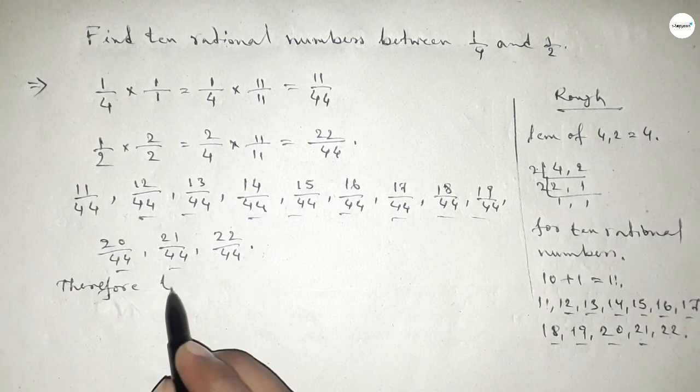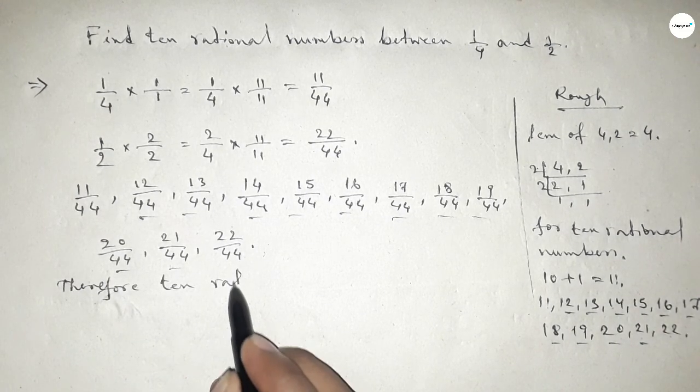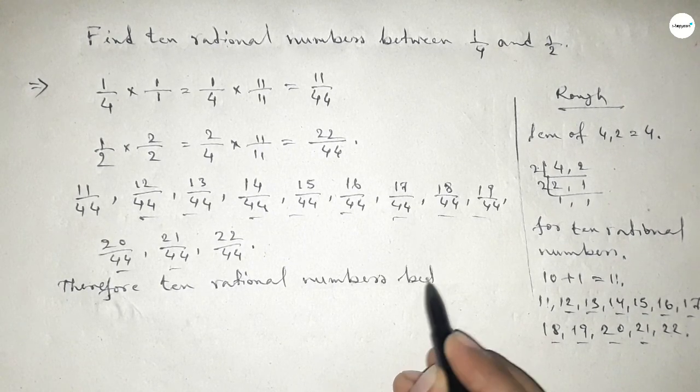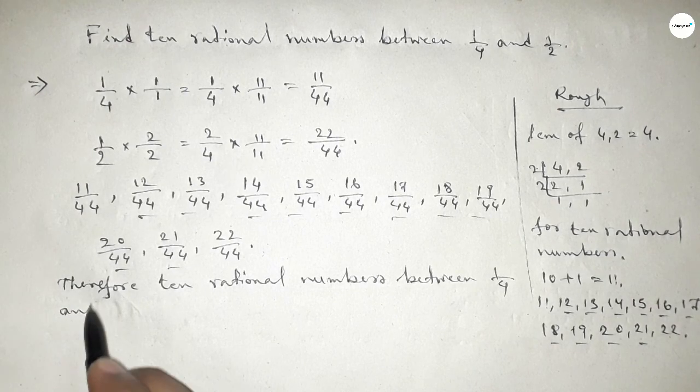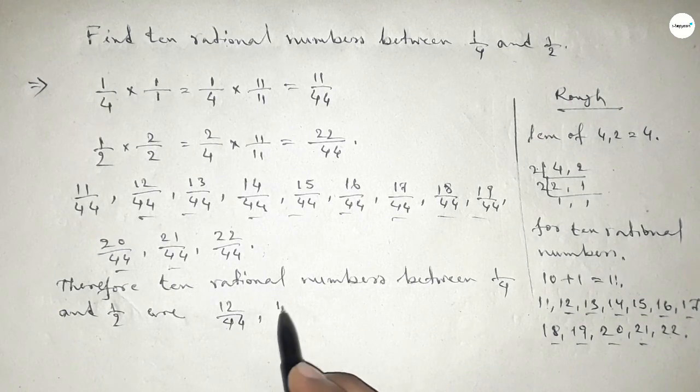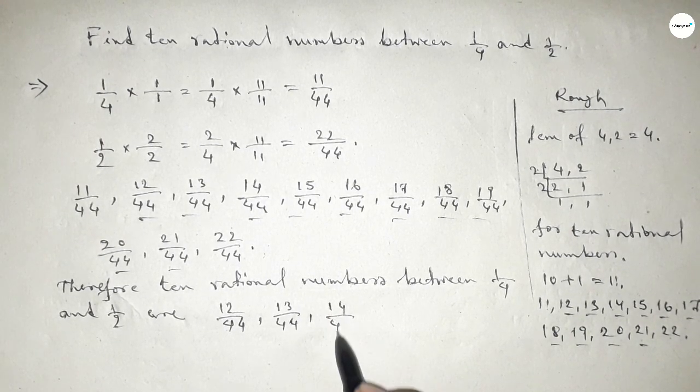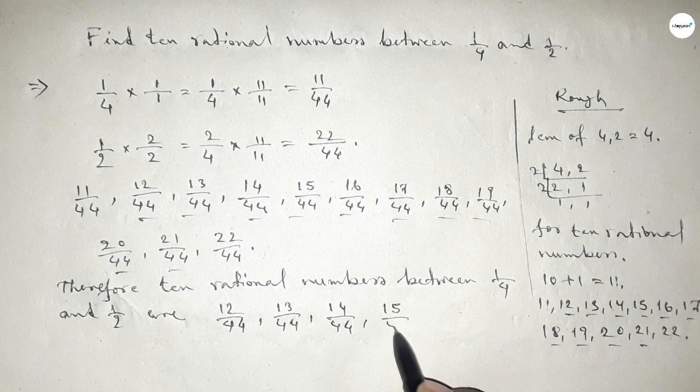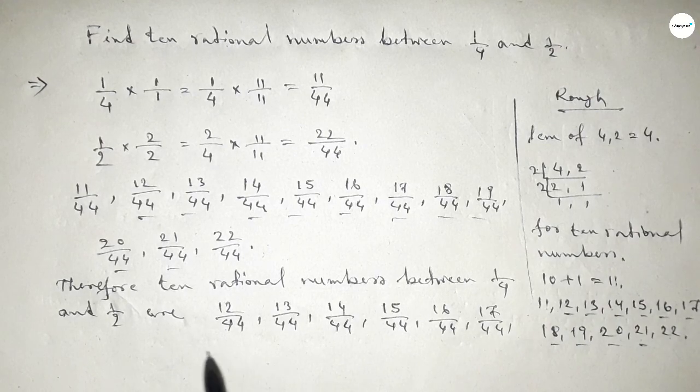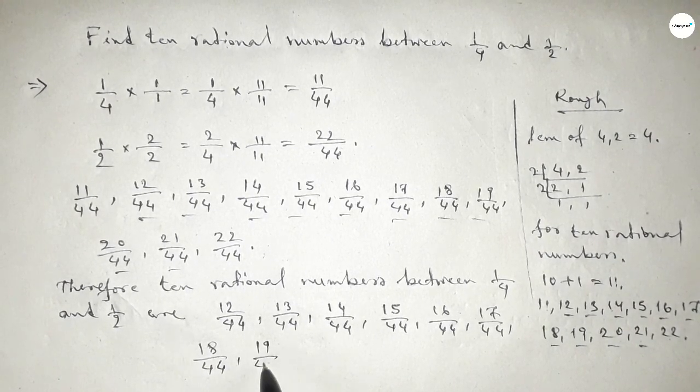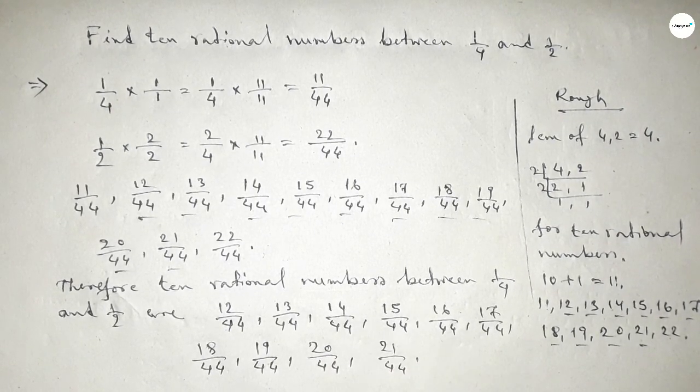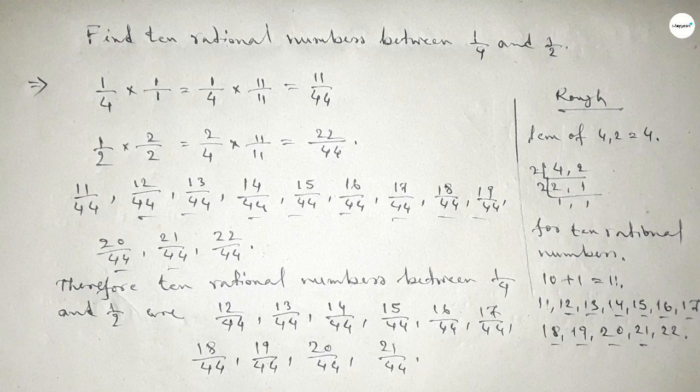Therefore, 10 rational numbers between 1/4 and 1/2 are: first one is 12/44, 13/44, 14/44, 15/44, and last one 21/44. So this is the process to find out 10 rational numbers between 1/4 and 1/2.